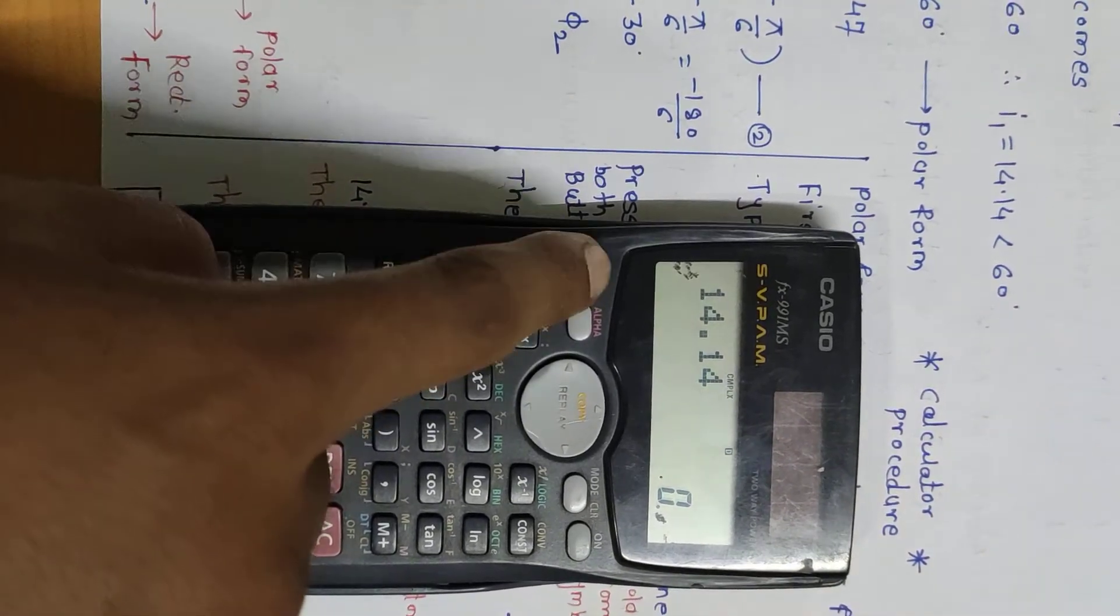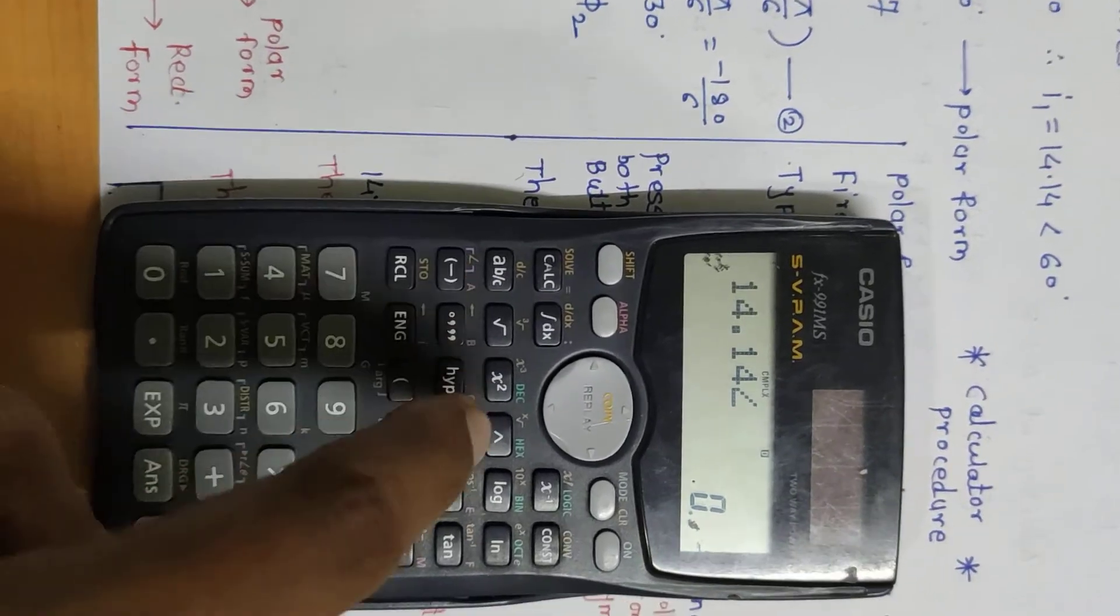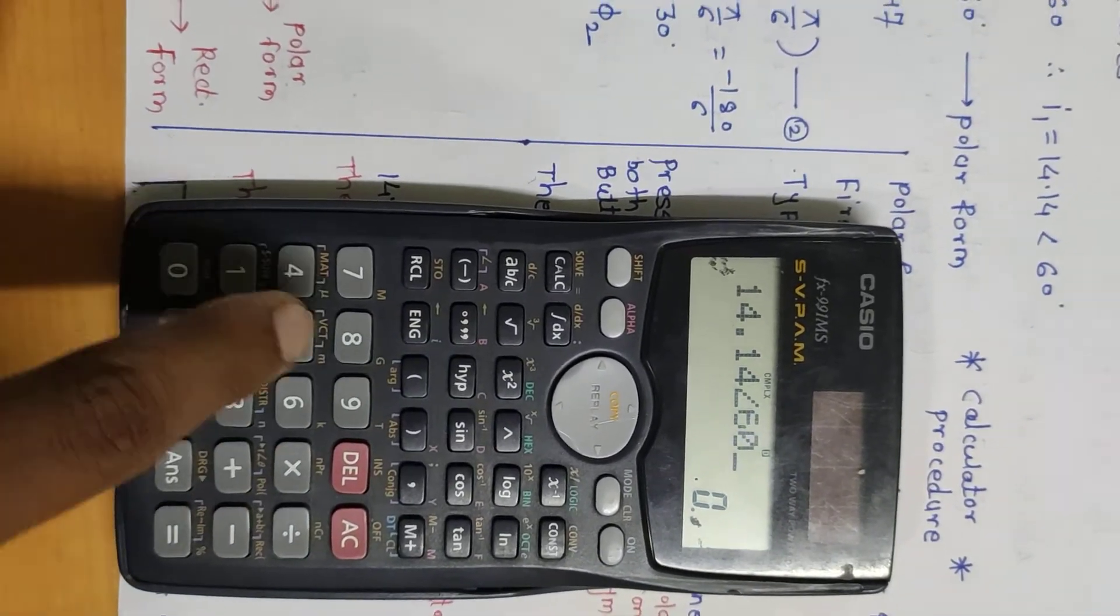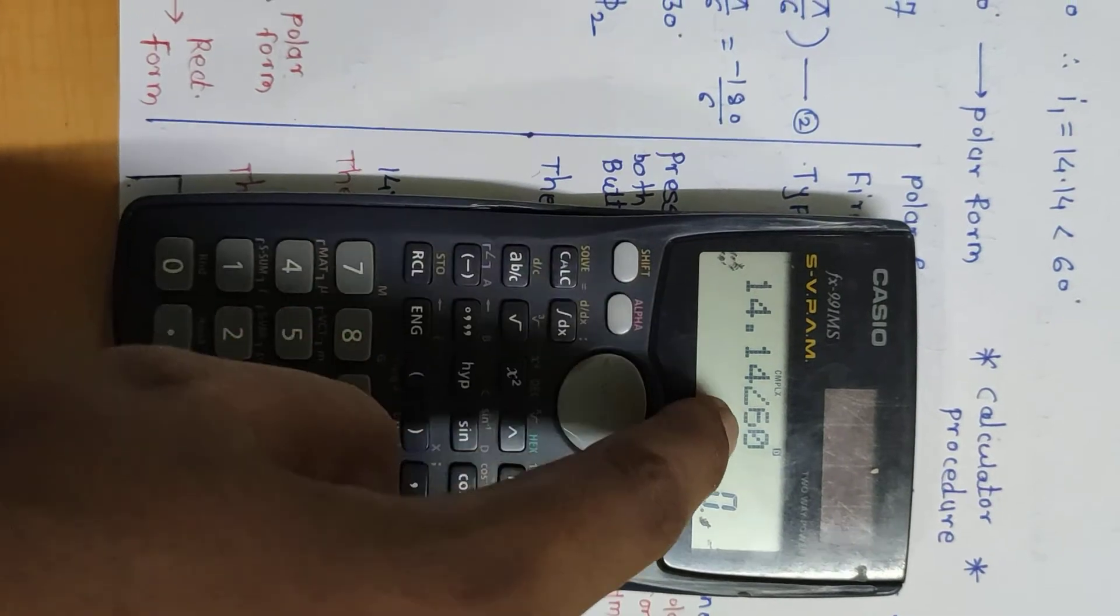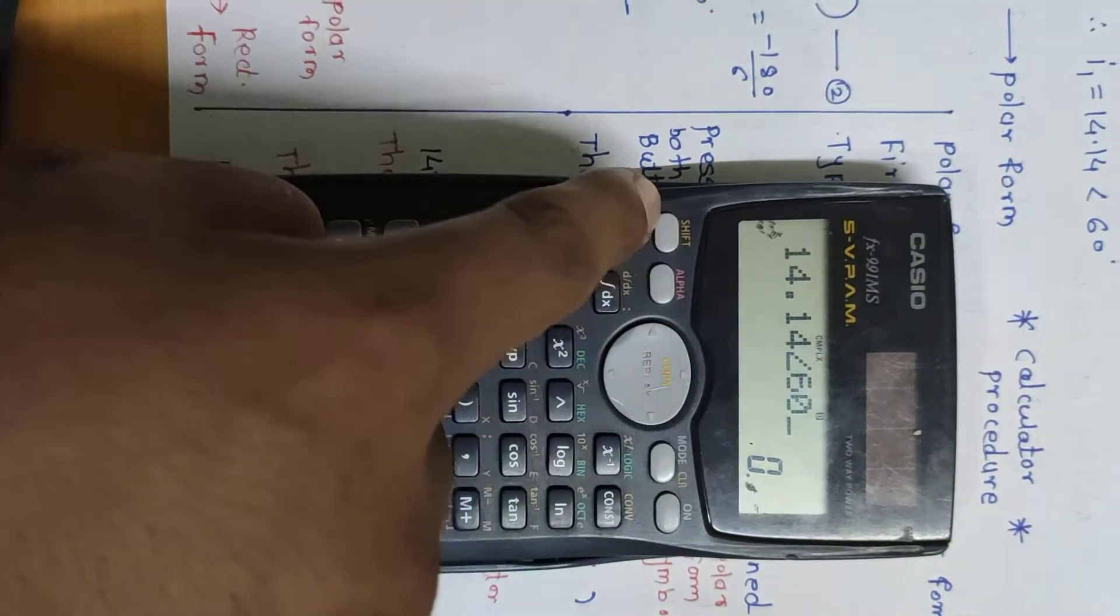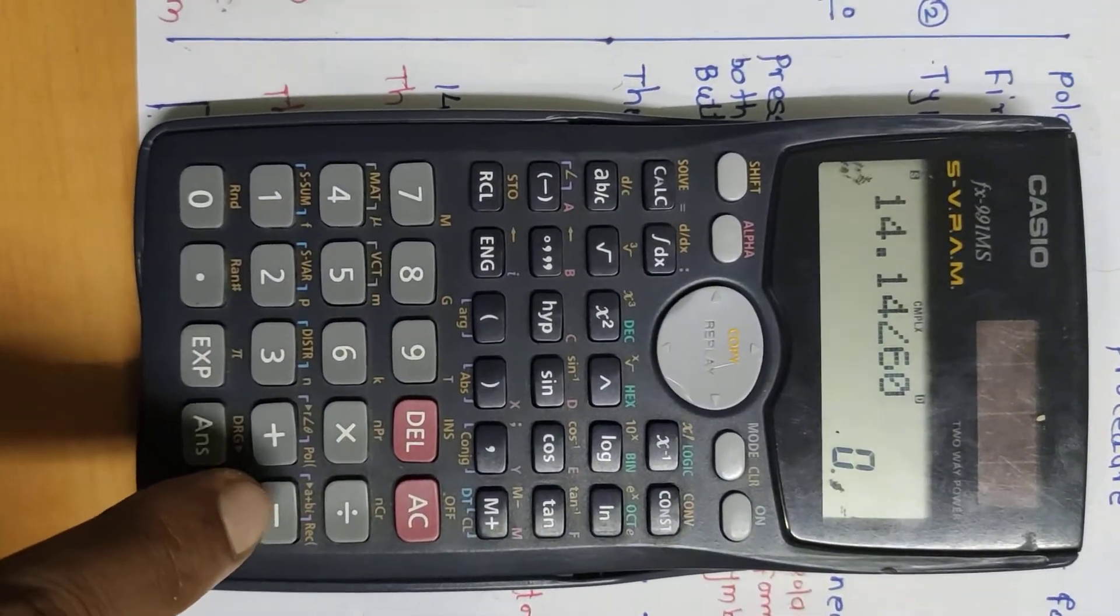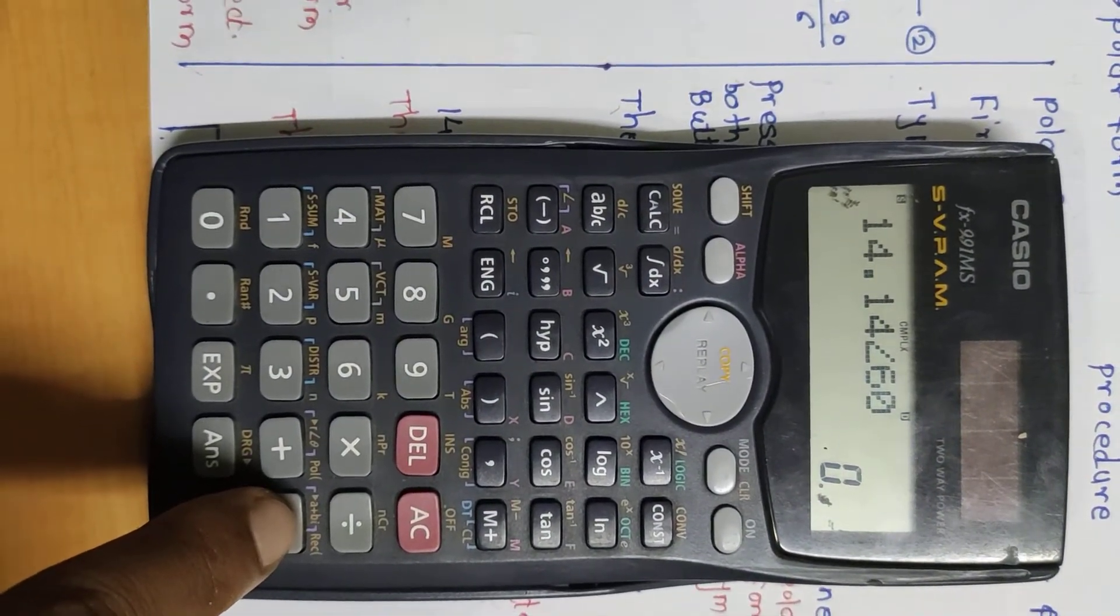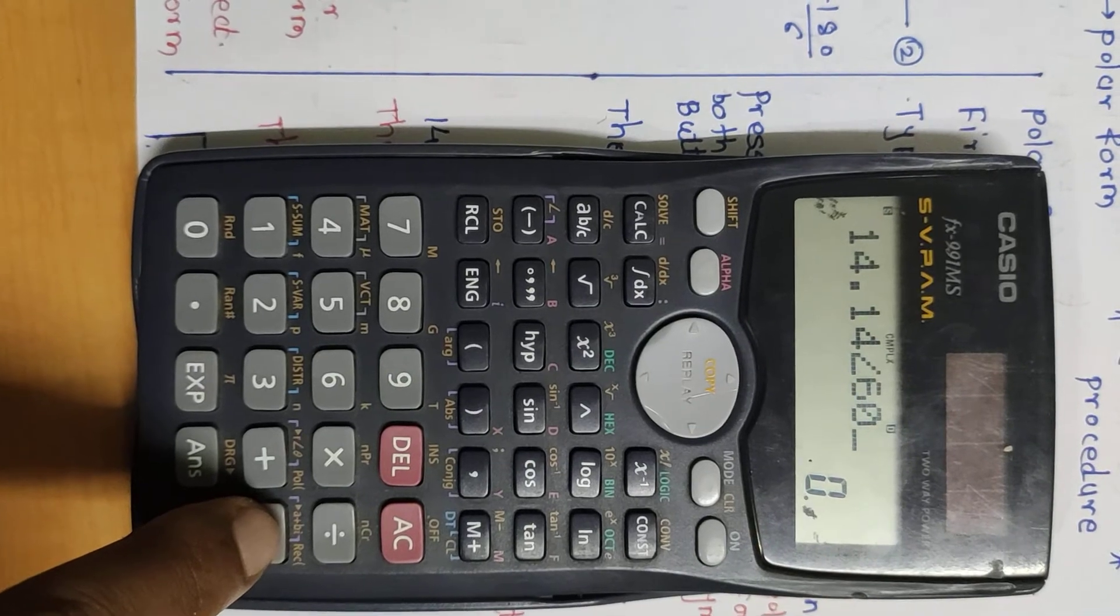Now we need rectangular form. Press shift and minus to get a plus bi - that's the symbol for rectangular form. Press a plus bi (shift minus) to obtain a plus bi format.